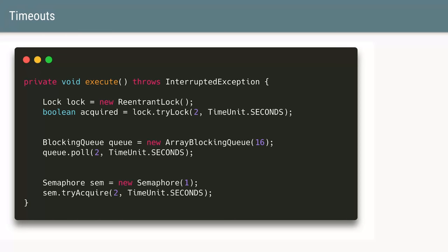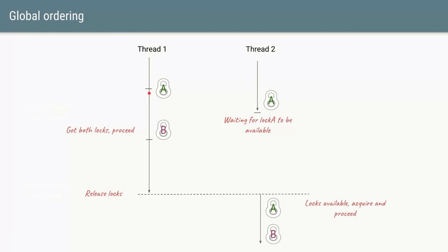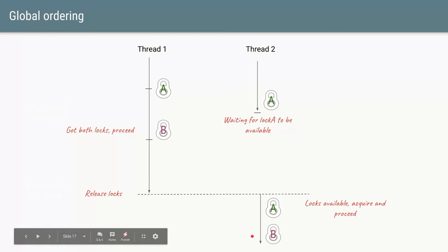Most blocking concurrent utilities do have timeouts to help avoid deadlocks. The other important consideration is the ordering of locks. In our earlier example, 'processThis' acquired Lock A then Lock B, while 'processThat' acquired Lock B then Lock A. The fix is to always acquire Lock A first, then Lock B in both methods. Thread 1 gets Lock A, Thread 2 waits for Lock A, Thread 1 acquires Lock B, completes processing, releases both locks, and then Thread 2 can proceed.